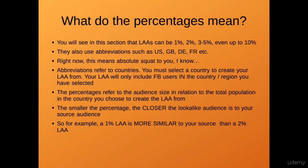The percentages refer to the audience size in relation to the total population in the country you choose. So if we chose US, then 1%, 2%, or 3-5% would refer to the population size relative to the total US population. The smaller the percentage, the closer the lookalike audience is to your source. A 1% LAA is more similar to your source than a 2% LAA. The larger the percentage, the more imperfect the clone — 1% is who Facebook believes are most like your source, and the further you go toward 10%, the less similar they become.